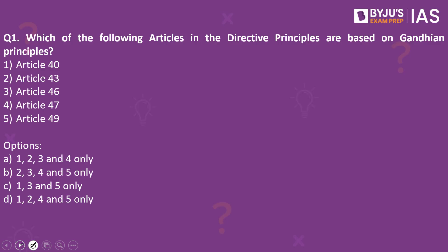Which of the following articles in the directive principles are based on Gandhian principles? Article 40, Article 43, Article 46, Article 47, Article 49. The answer to this is 1, 2, 3 and 4 only.